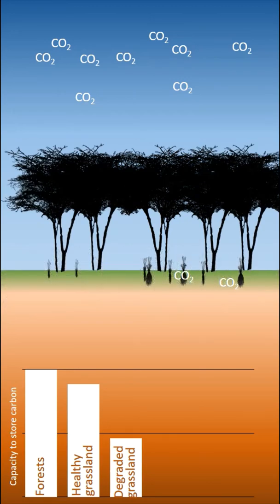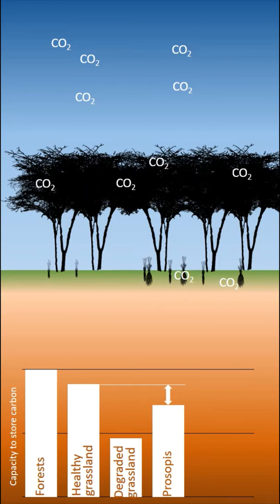It reduces the diversity and biomass of plant species and consumes a lot of water. Despite this, some organizations continue to promote it to fight climate change. They say that prosopis can help to store carbon. It is true that an area covered by prosopis can store more carbon than degraded grassland.